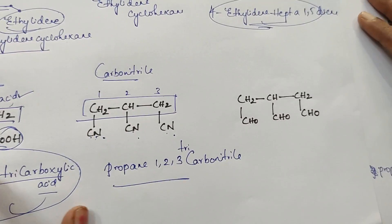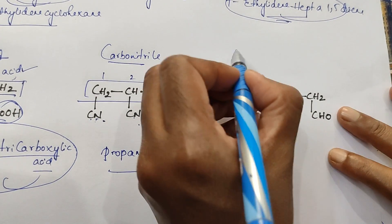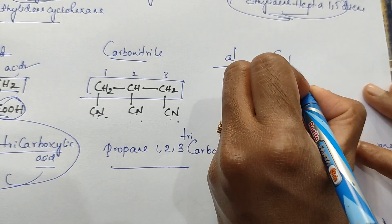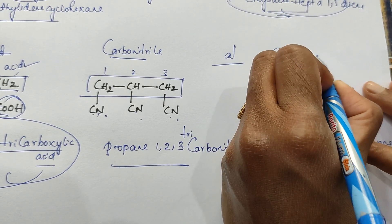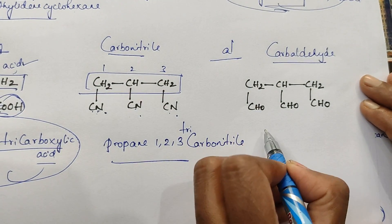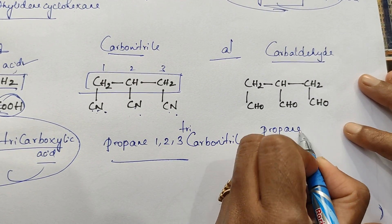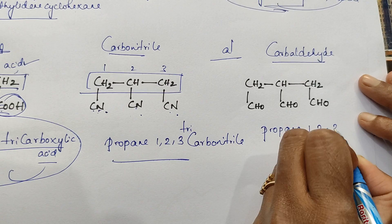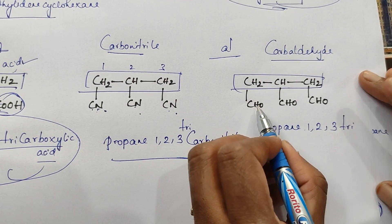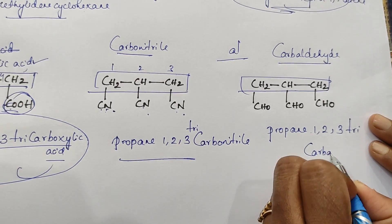Will you try this one? Click on pause and try. I will give you a hint. Normally the secondary suffix is al. But here you will use carbaldehyde. Its name is propane-1,2,3-tricarbaldehyde. Because three CHO functional groups are there.